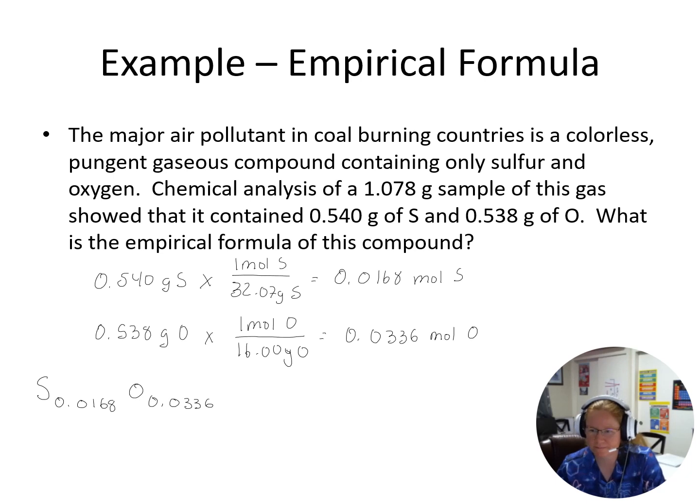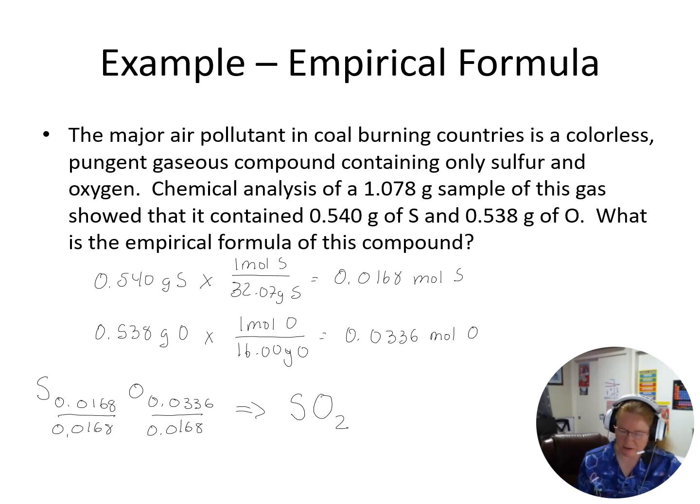Is that a good formula? No, it's not because can I have 0.03 oxygen atoms? No, I need to have whole number ratio. So how do we get our whole number ratio from this point? What we do here is we divide by the lowest number. So sulfur, we only have 0.0168 moles of sulfur. So I'm going to divide both of these by 0.0168. 0.0168 divided by 0.0168 gives me one. So I have one sulfur. 0.0336 divided by 0.0168 gives me two. So I have two oxygens. So my empirical formula is SO2.